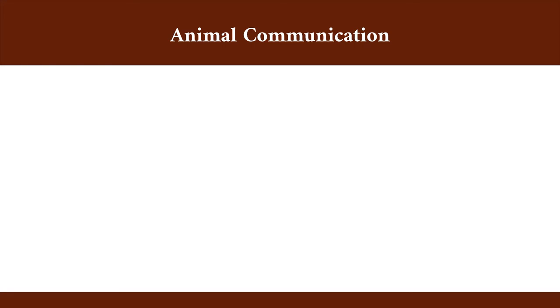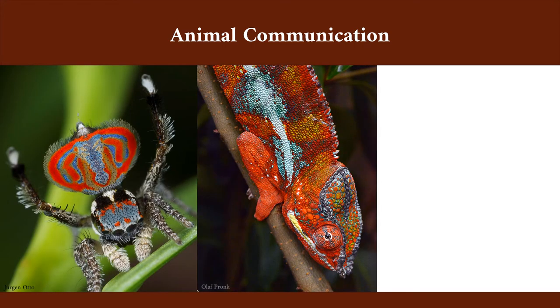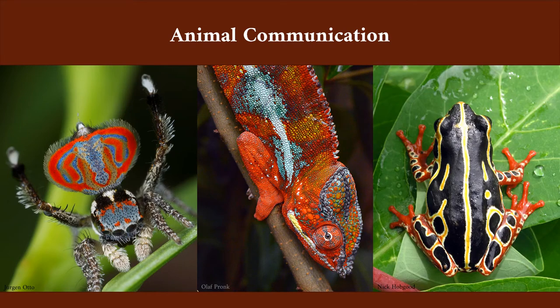Animals communicate to attract mates, like this peacock spider performing a courtship display, to drive competitors away, like this chameleon performing a threat display, and to avoid predation, like this frog that has aposematic colors.